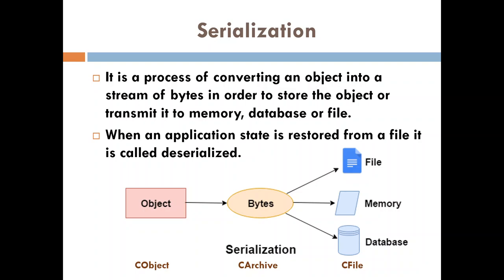What do you mean by serialization is: after I create an application with all these objects using CObject class, I have to store that particular application program and I should be able to retrieve it in the future. All the objects in my application have to be first converted into bytes — converted into binary, zeros and ones. That conversion process is called archiving.